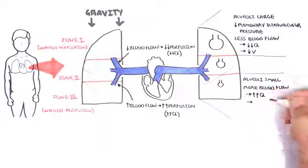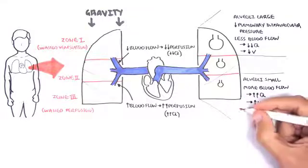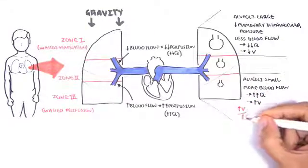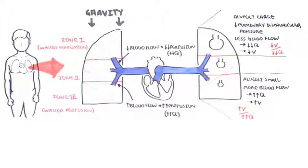You have more blood flow to the base of the lungs, so you have more perfusion. At the base, you also have more ventilation because the small alveoli are able to expand more. However, the ventilation increase is not as much as the increase in perfusion, and thus the VQ ratio is lower at the base. At the apex you have not-so-good ventilation and pretty poor perfusion. These differences in VQ ratio are thought to be primarily due to gravity, but other factors including different diseases also play a role.